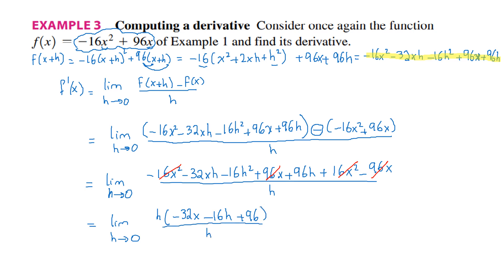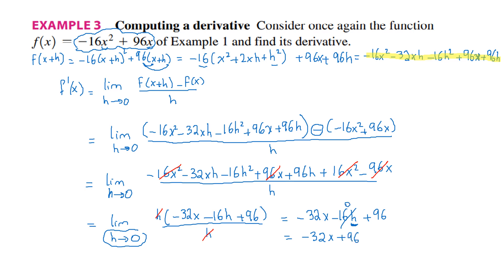Cancel the h. The answer is going to be minus 32x, minus 16h, plus 96. Don't forget h is going to 0, so substitute h by 0. You get minus 32x plus 96. And this is the derivative f prime of x.